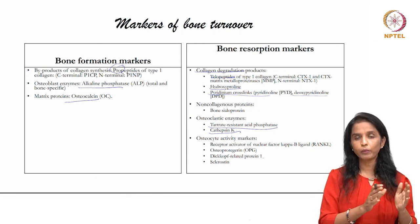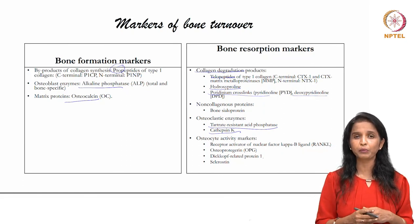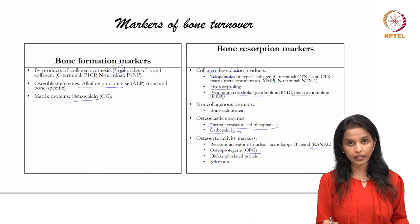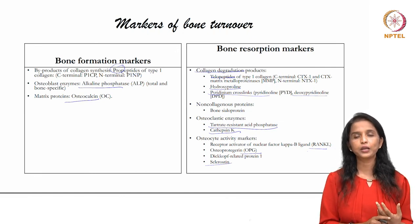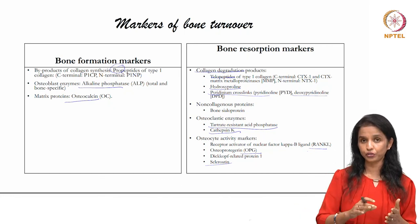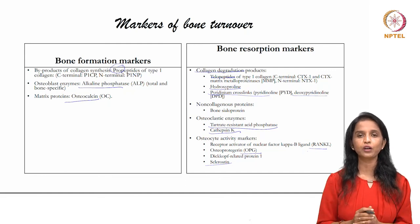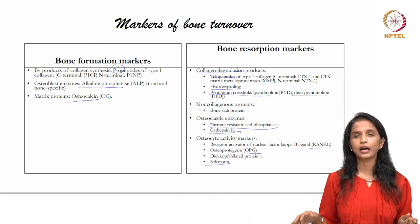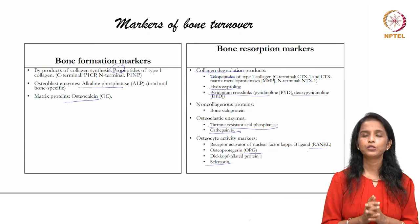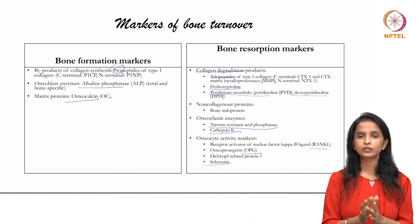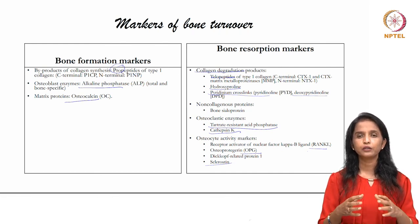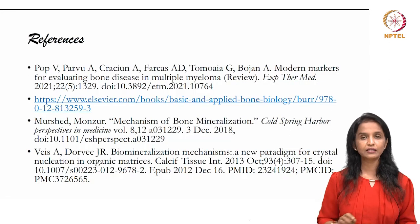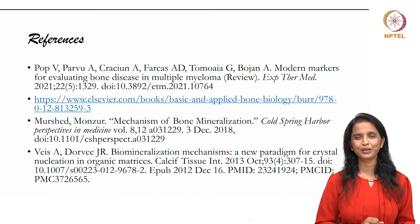Beyond osteoblast and osteoclast markers, osteocyte-specific markers include RANKL, OPG, Dickkopf-related protein 1 (DKK1), and sclerostin, which are indicative of bone resorptive activity. Some markers are specific to osteoclasts and some to osteocytes. With these markers of bone turnover, we complete the learning of mineralization mechanics, which forms the basis of physiological and pathological mechanisms in the orofacial region.